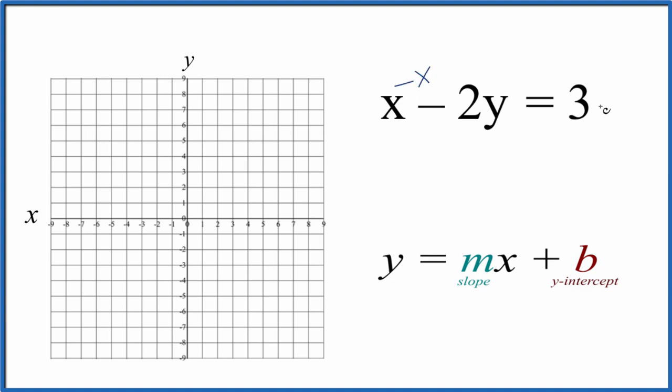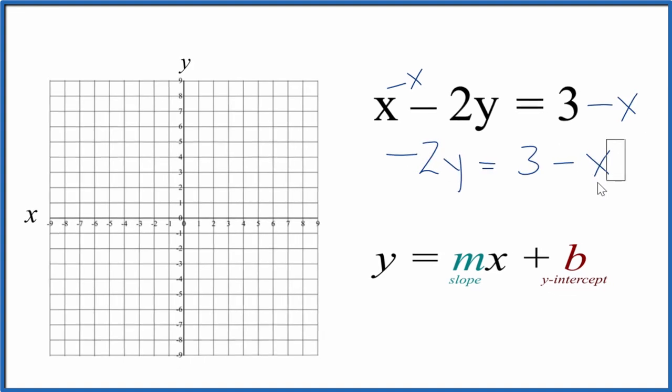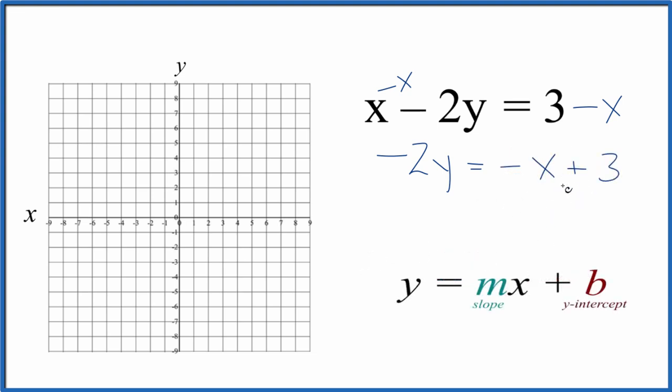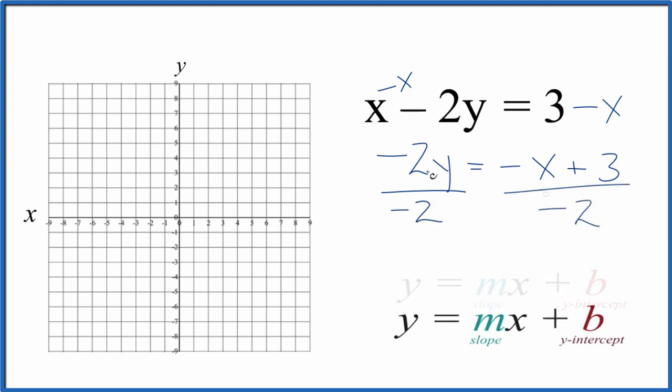Let's subtract x from both sides. But let's put the negative x first so it's more like slope-intercept form. So now to get y by itself, we'll divide both sides by negative 2. Negative 2 divided by negative 2, that's just 1, so we have y.